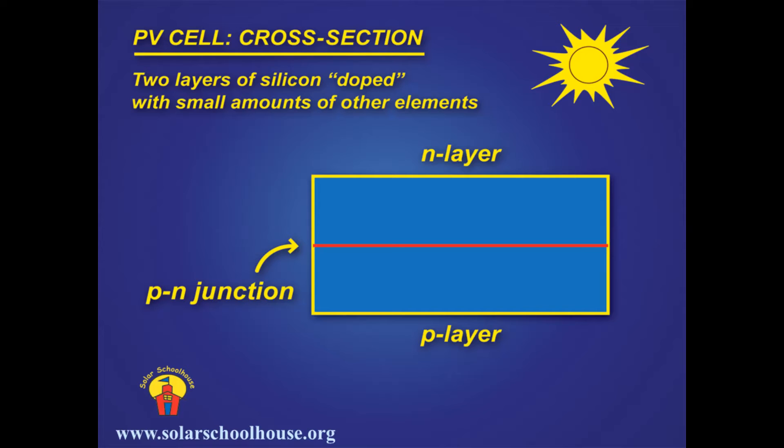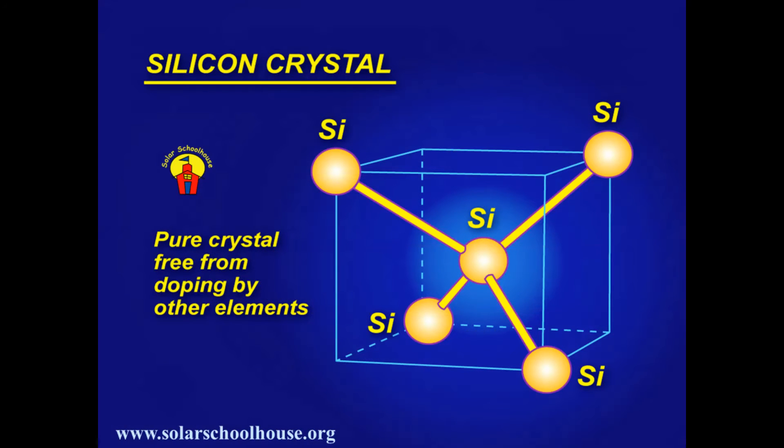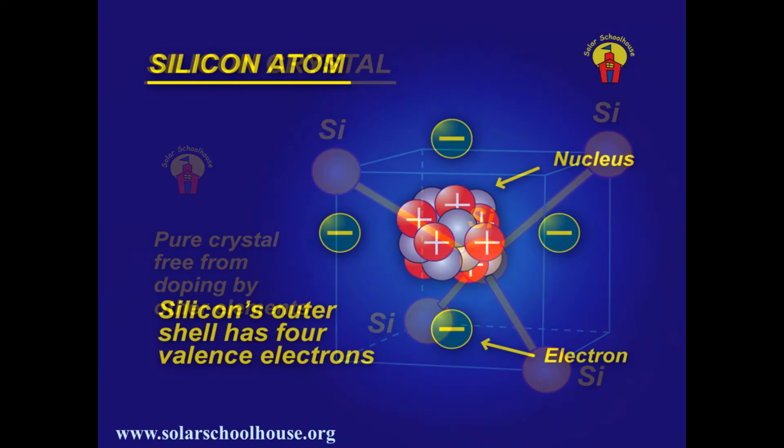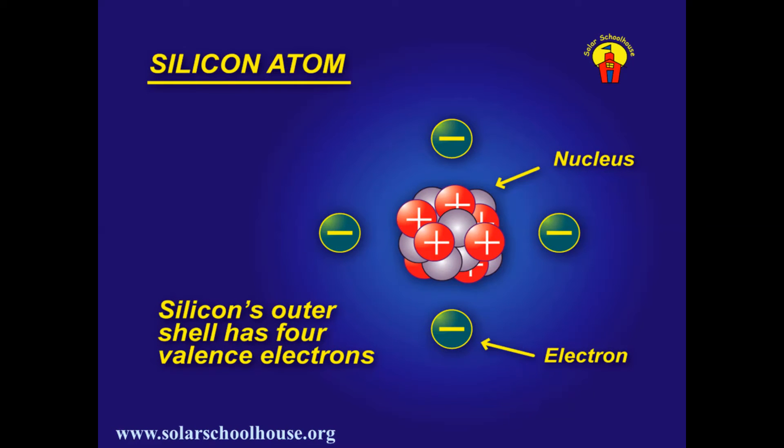Each layer contains a small amount of another element using a process called doping. This additional element changes the electrical characteristics of the silicon crystal. Here is a picture of the basic silicon crystal before the addition of any doping elements. The crystal is composed of individual silicon atoms. The silicon atom has four valence electrons in its outer shell. The negative charge of these electrons is balanced by the positively charged nucleus.